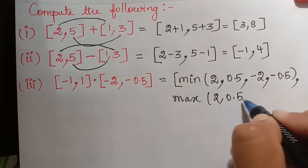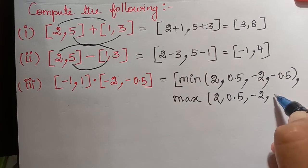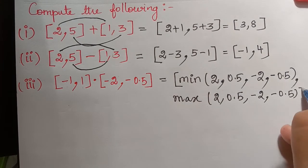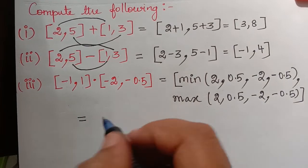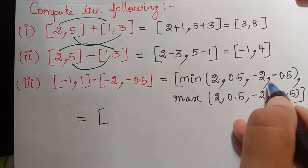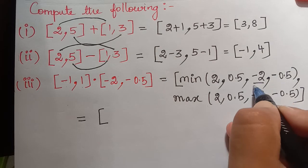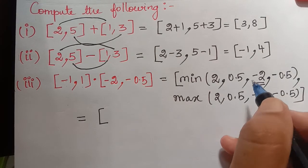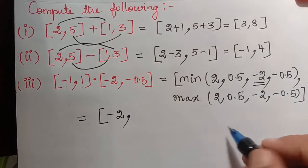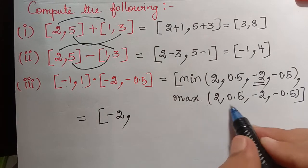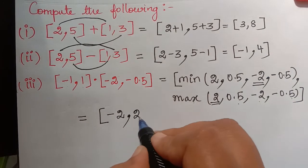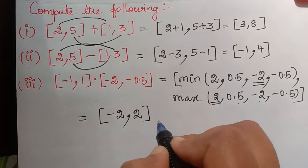The minimum of {2, 0.5, −2, −0.5} is −2 and the maximum is 2. So [−1, 1] multiplied by [−2, −0.5] gives the closed interval [−2, 2].